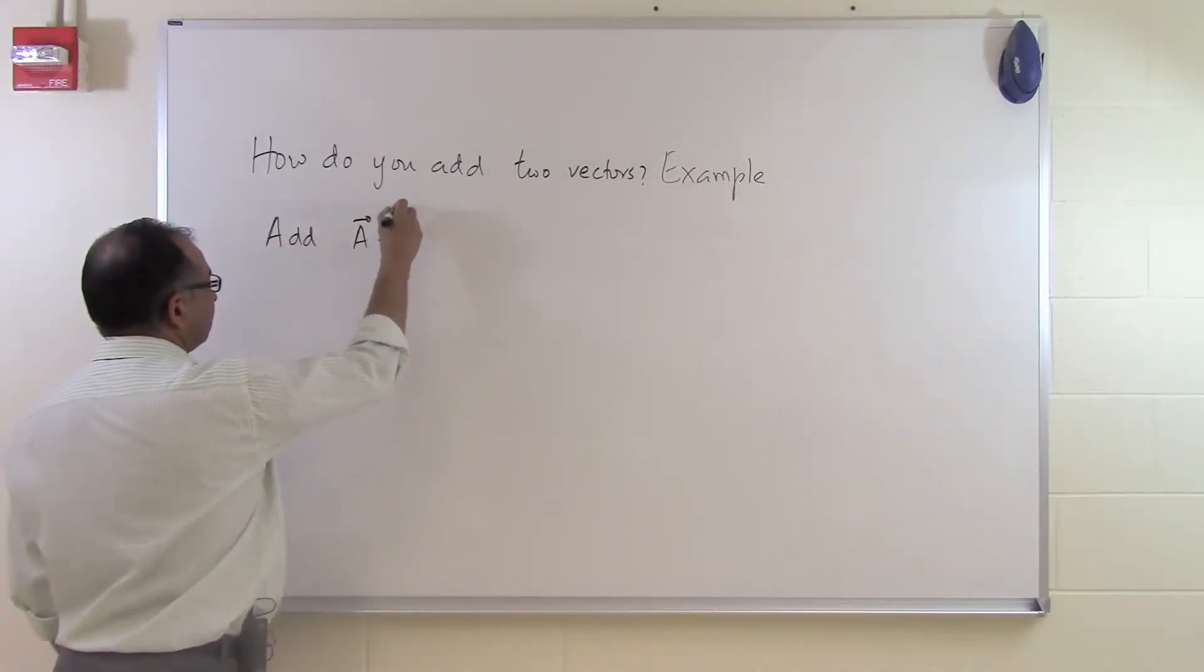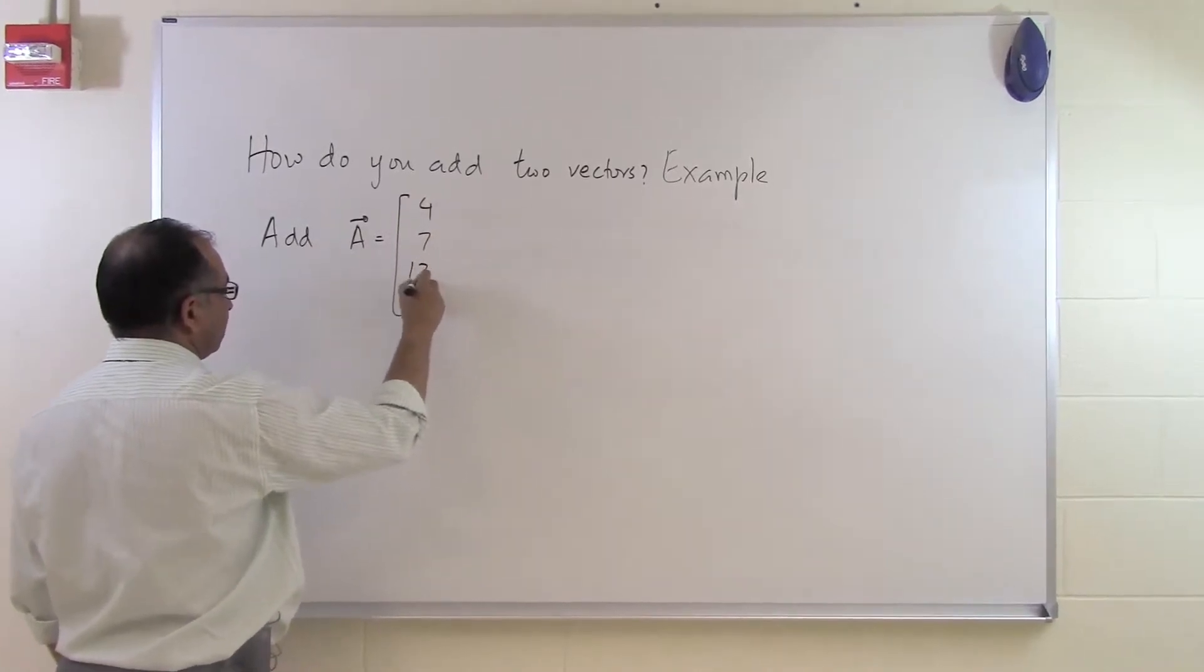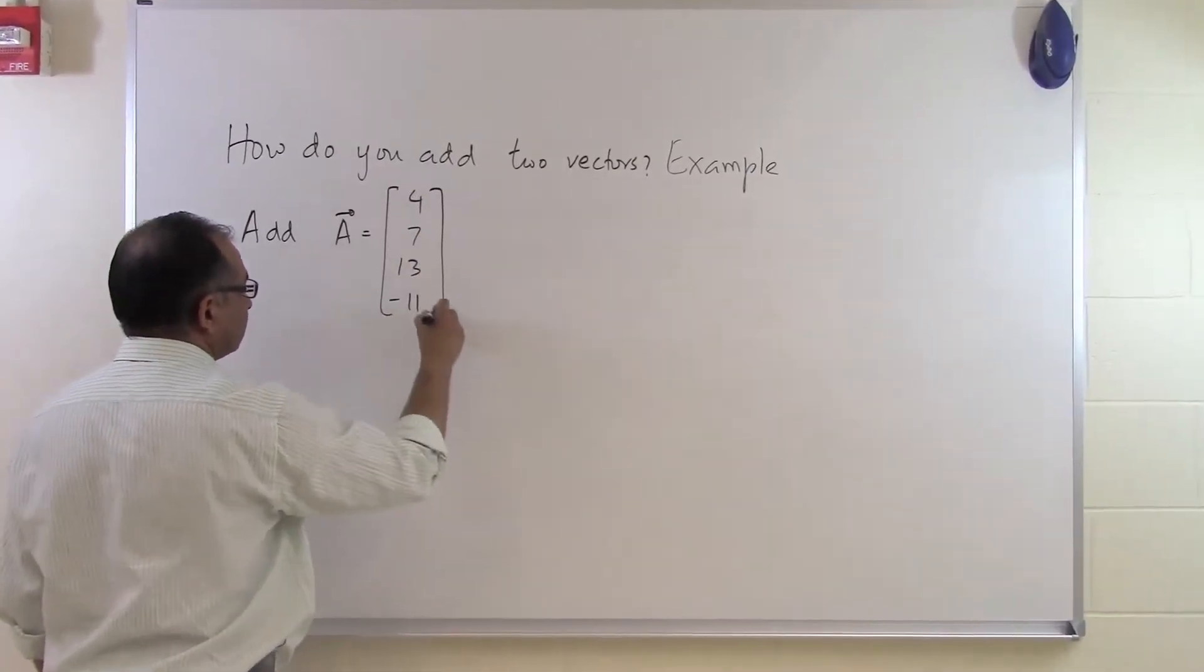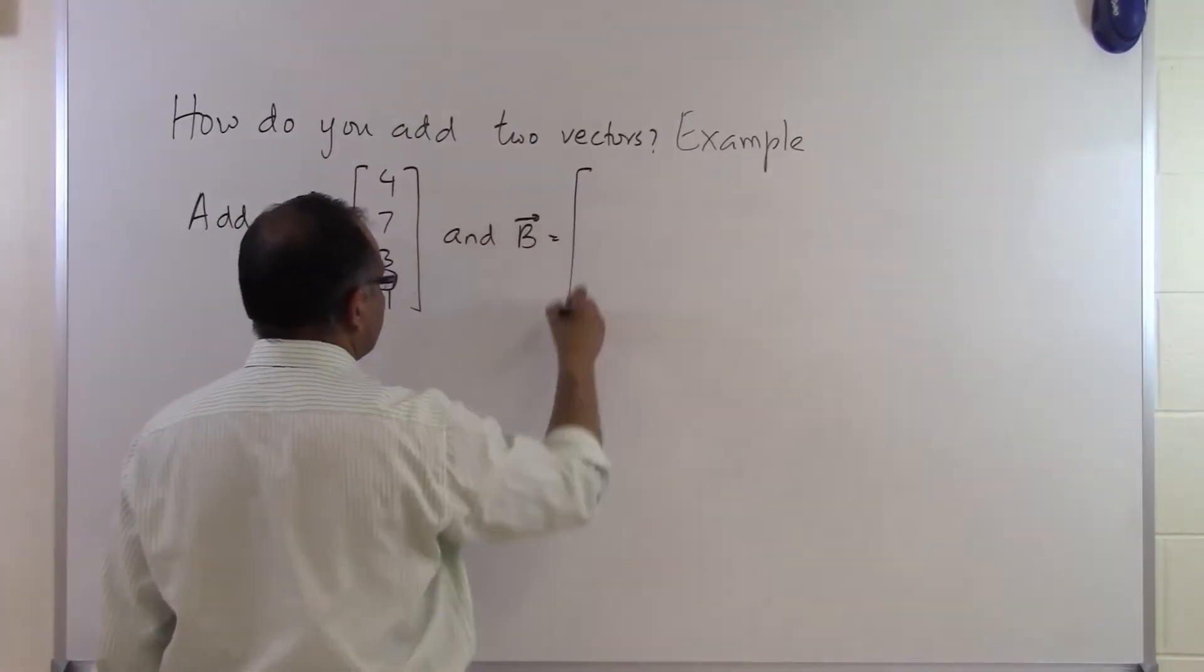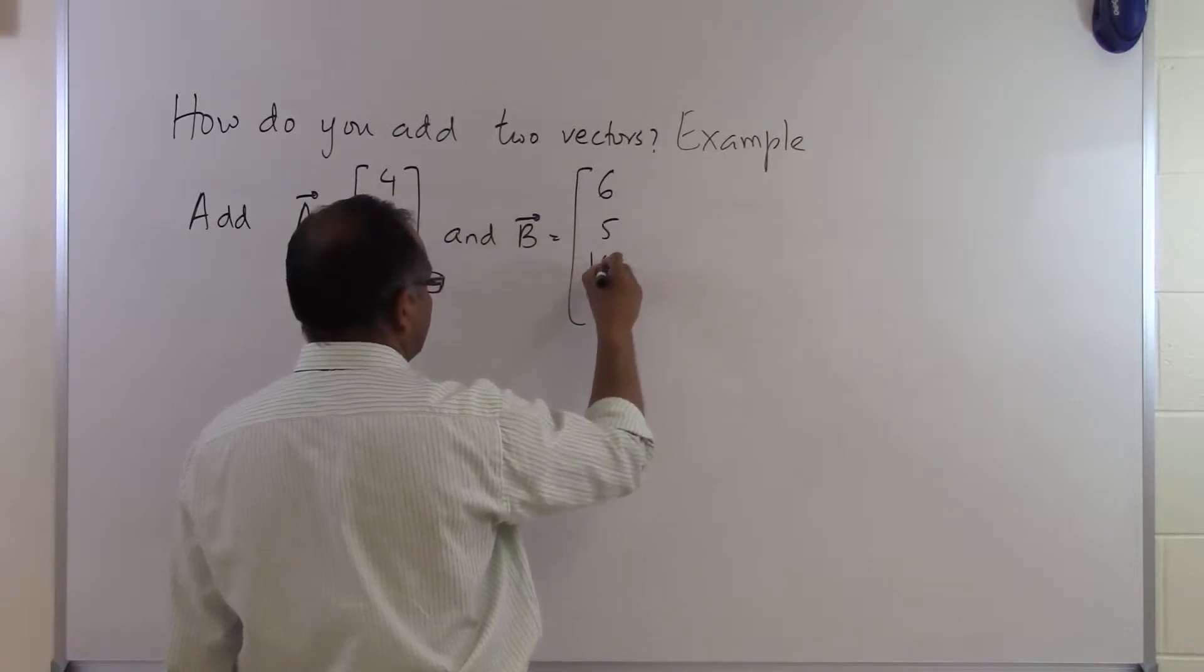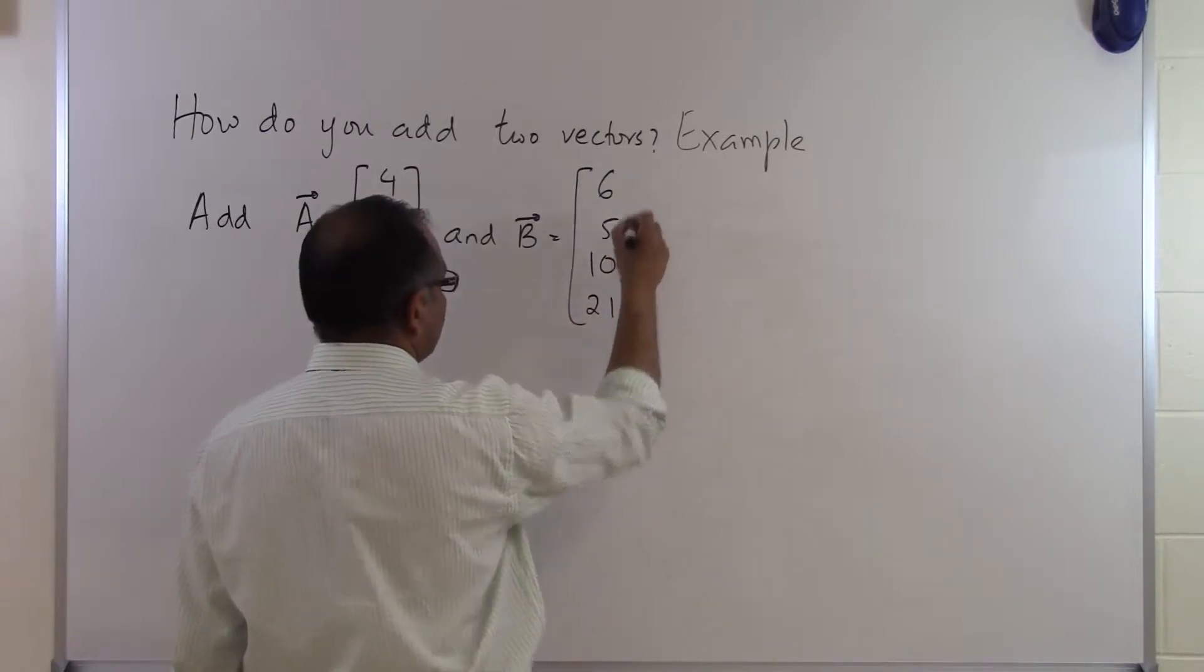Add vector A is given as 4, 7, 13, minus 11, and another vector B is given to you as 6, 5, 10, and 21.